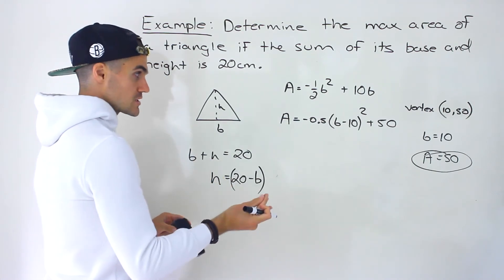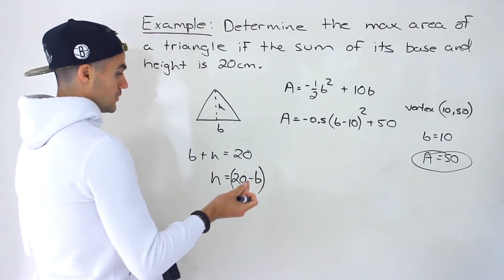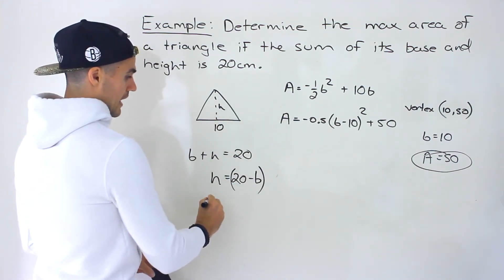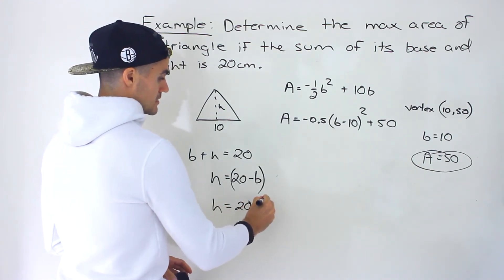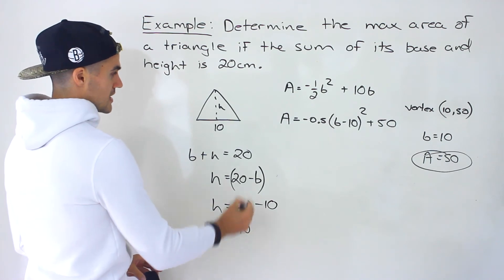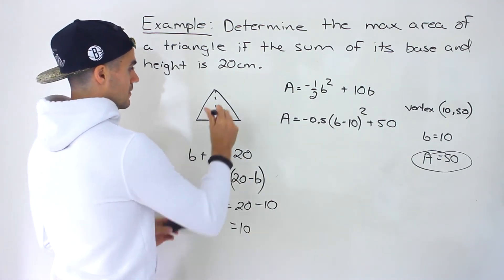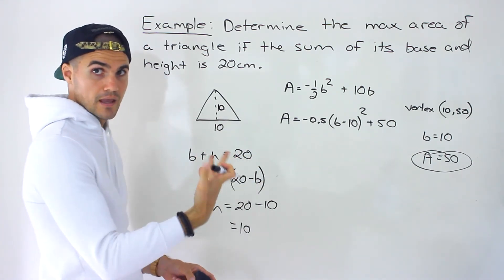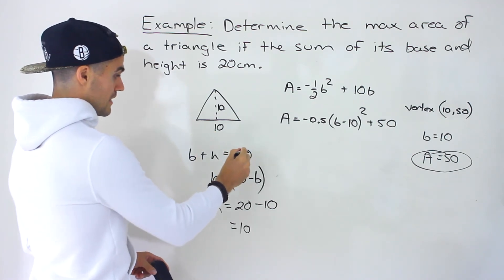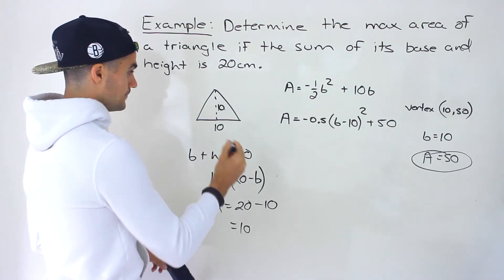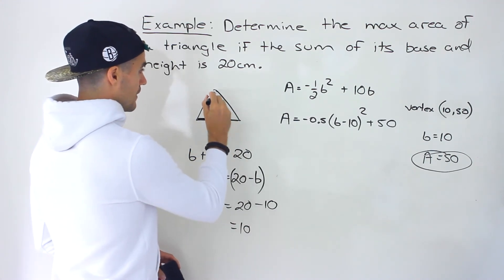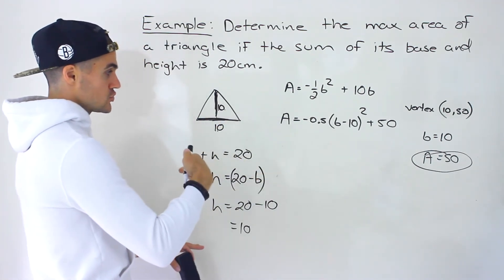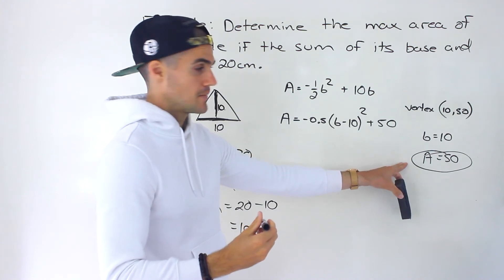Now if they were asking for the actual dimensions of the triangle: the base would be 10, and we find the height using the constraint — 20 minus 10 equals 10. So the height is also 10. With a base of 10 and height of 10, the area is 10 times 10 divided by 2, which gives the maximum area of 50 square centimeters.